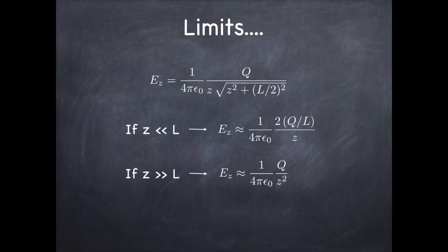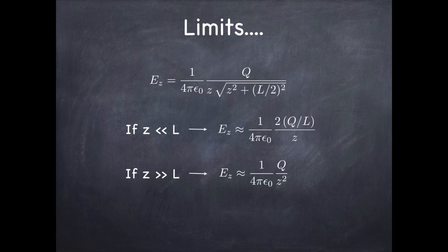However, if z becomes very large we can neglect (L/2) compared to z in the denominator — the square root becomes just z, and we get back the point charge formula Q/z² times 1/4πε₀. So very far from the rod, much farther than the size of the rod itself, this reduces to the point charge formula, just as it does for the ring.